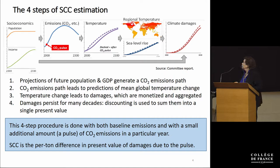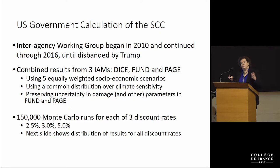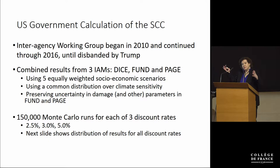The U.S. government began doing this in 2010. An interagency working group was formed with support from Michael Greenstone, and colleagues at EPA did a lot of the heavy lifting. What they did was take three well-known integrated assessment models — DICE, Fund, and Page — and harmonize what went into these models. For the socio-economic paths, they took five scenarios from the Stanford Energy Modeling Forum and assumed they were equally likely. Climate sensitivity — the impact of a doubling of atmospheric CO2 concentrations on mean global temperature — was harmonized across the three models, and parameter uncertainty in Fund and Page was carried through the simulations.